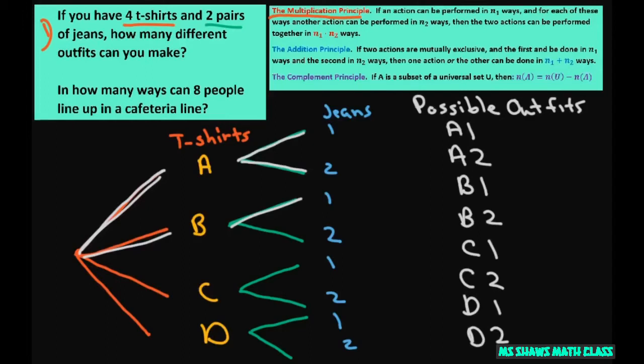Instead of doing a tree diagram, you could use the multiplication principle, also known as the counting principle. We could just say four times two equals eight. Two actions can be performed together in m times n ways.